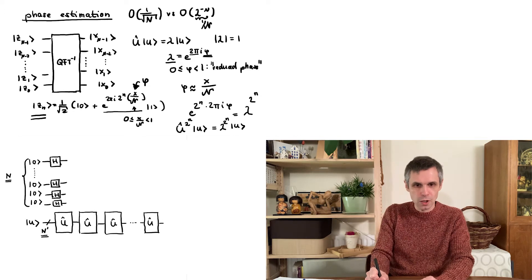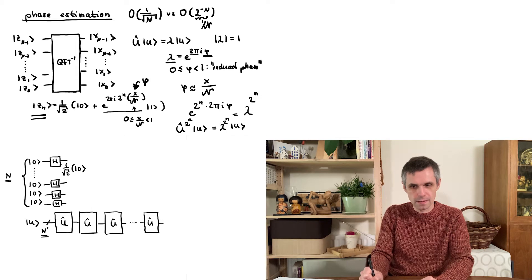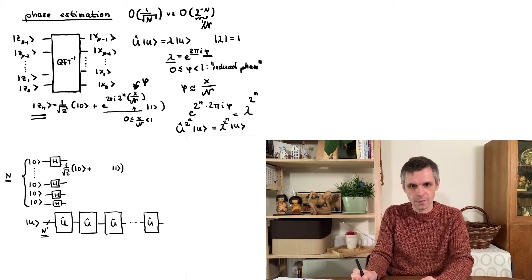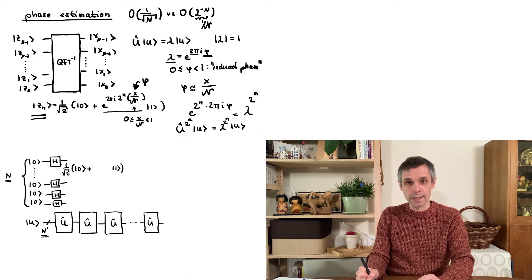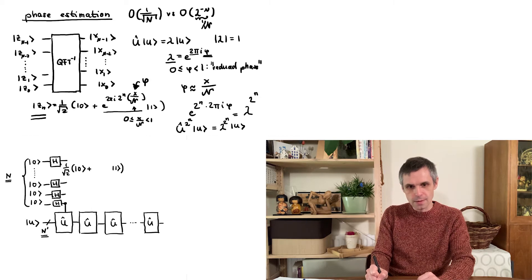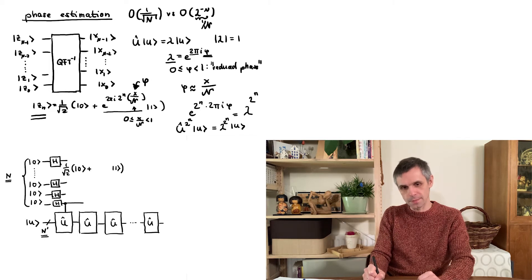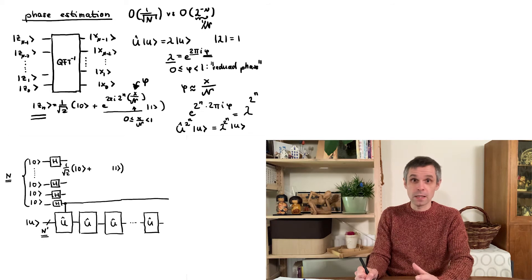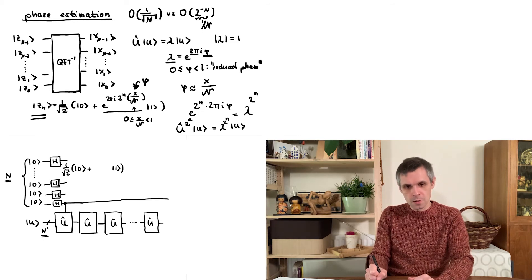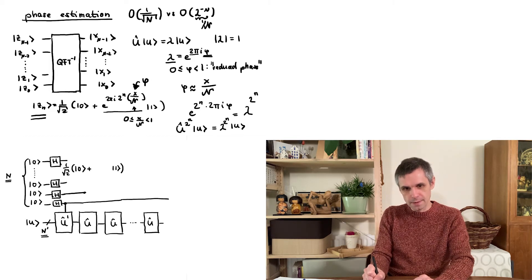And so afterwards, each of these individual quantum bits is in this state here. And in order to obtain these phase factors, we are going to apply these unitary operators, but conditionally, so that these phase factors only appear in front of the basis state 1. But for the different quantum bits, we need to have these phase factors with different powers. So while we here apply u just once, we apply it here twice.